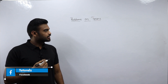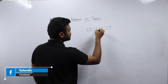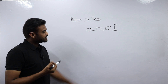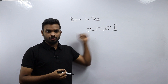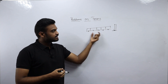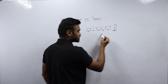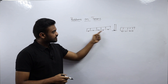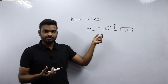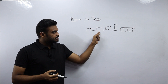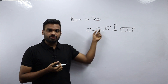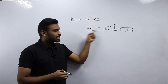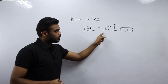Consider one example. Suppose there is a train and a long pole. This train needs to cross the pole or overtake the pole. In order to cross the pole, the entire train needs to be outside of the pole — that means all bogeys of the train need to be outside the pole.